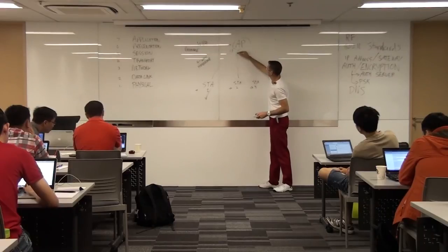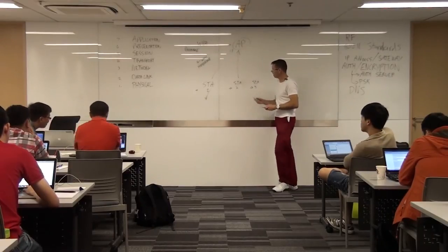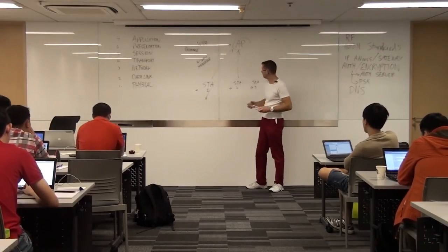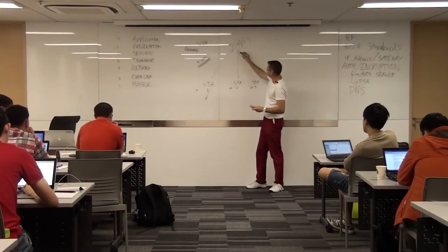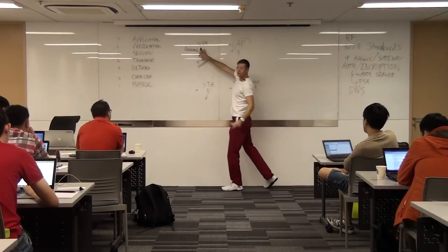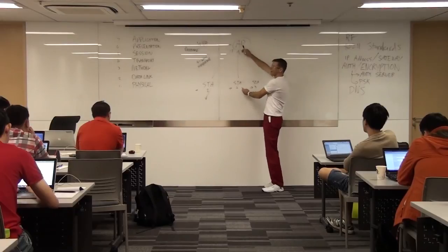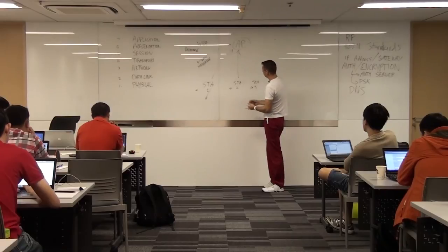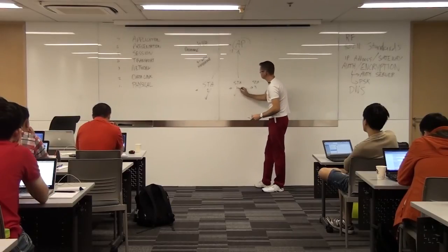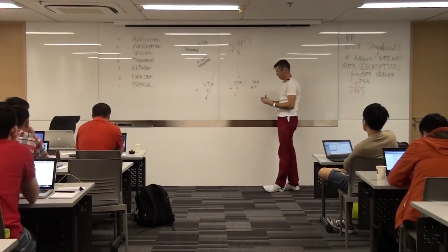So now this station has a traffic key and can talk to the access point. When station two comes along and goes to the AP, he does the same thing - they associate, they use the passphrase that they all know, but then they make their own traffic key just for those two stations.